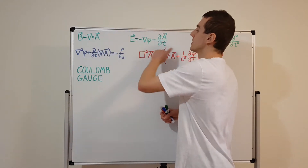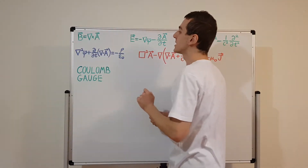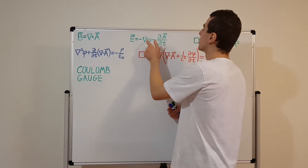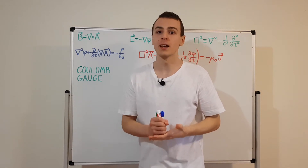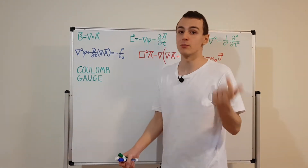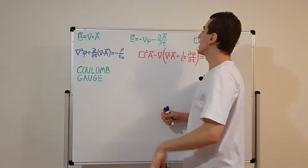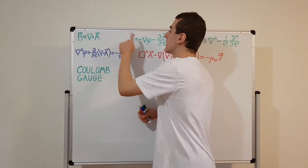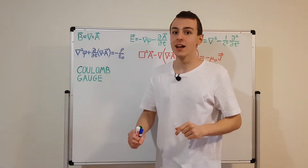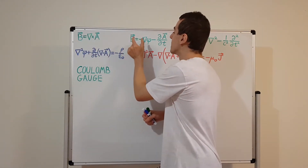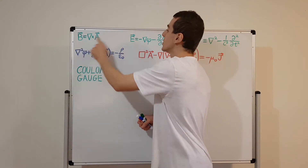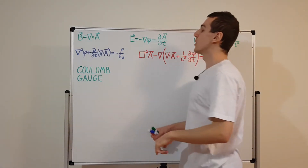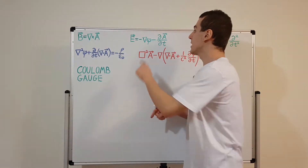These two green equations are a way of expressing the electric and magnetic fields in terms of the scalar and vector potential. So phi and A are the scalar and vector potential, and we actually have freedom to choose these. We can impose conditions on them through gauge transformations, which allow you to switch between different phis and A's that correspond to the same electric and magnetic fields, preserving all physical experimental results. That is the property of gauge invariance.